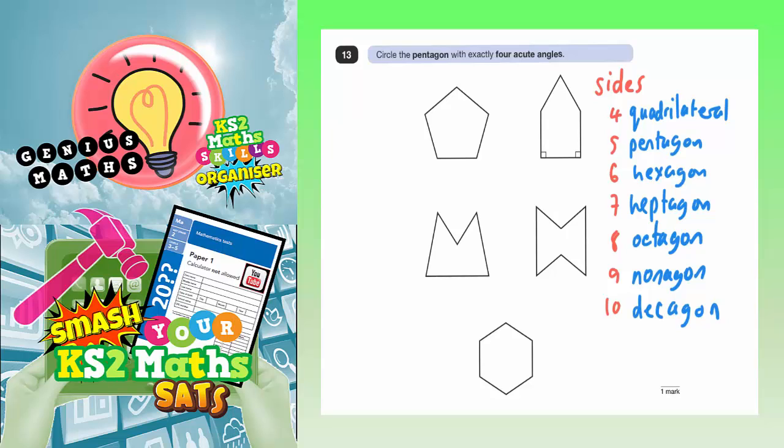Question 13: circle the pentagon with exactly four acute angles. Well, we need a little bit of knowledge about shapes here. Now I've already written down the names of shapes according to how many sides they've got. A pentagon is this one here, it's got five sides, so the first thing to do is actually check that they're all pentagons.